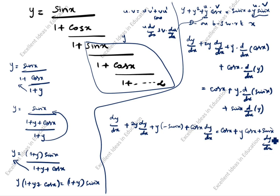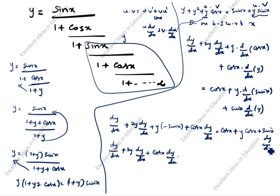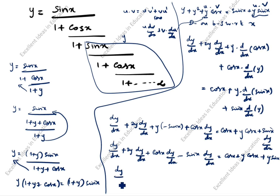dy/dx appears on both sides, so we bring all dy/dx terms to one side. dy/dx plus 2y·dy/dx plus cos x·dy/dx minus sin x·dy/dx equals cos x plus y·cos x plus y·sin x. Taking dy/dx as common: dy/dx times (1 + 2y + cos x - sin x) equals cos x times (1 + y) plus y·sin x.